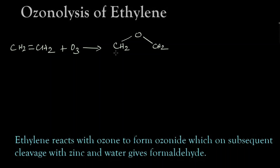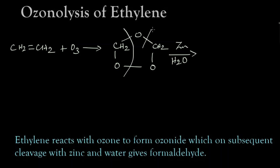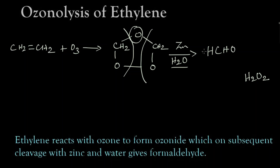We then react the ozonoid with zinc and water. The bond gets cleaved, and the H2 and oxygen get removed as hydrogen peroxide H2O2. The remaining CH2O is released as two molecules of H-CHO, which is called formaldehyde.